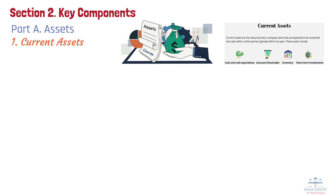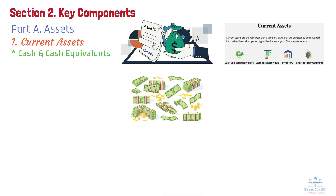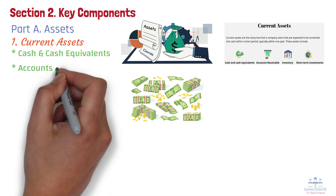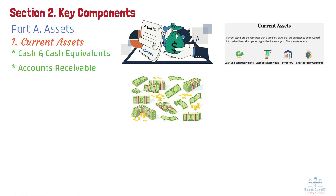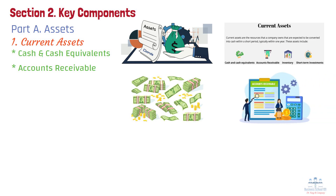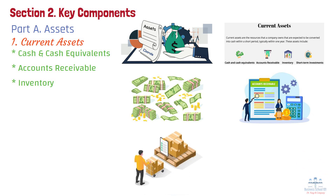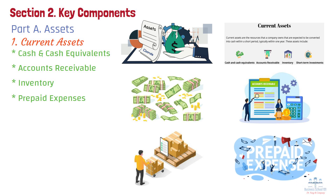Examples of current assets include: cash and cash equivalents — money that is readily available, including cash in hand, checking accounts, and highly liquid short-term investments like treasury bills; accounts receivable — money owed to the company by customers for goods or services already delivered, which companies expect to collect in the near future; inventory — products or raw materials the company intends to sell, requiring efficient management to balance supply and demand; and prepaid expenses — payments made in advance for services such as rent, insurance, or subscriptions, considered assets because they provide future economic benefits.